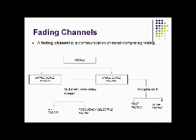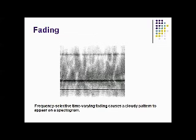Now we study the fading introduced as the signal travels from the transmitter to the receiving end. Fading is the deviation of the attenuation affecting a signal over a certain propagation media. It decreases the signal-to-noise ratio of the signal, and its cause is due to reflectors present around the transmitter and the receiver. The fading is classified as follows. Here is an illustration of frequency selective time fading, which causes a cloudy pattern to appear on a spectrogram.